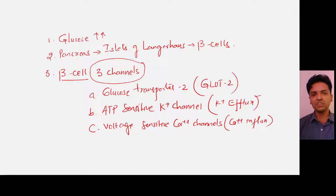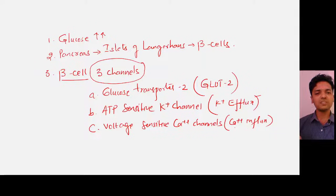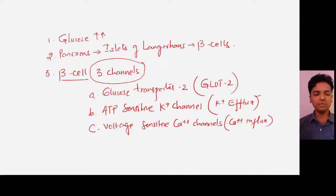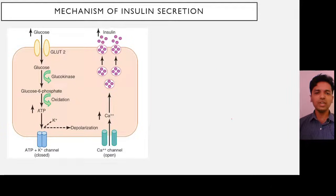To recap: the beta cell has three channels. GLUT2 allows glucose from outside to enter inside. The ATP-sensitive potassium channel causes potassium efflux — potassium inside the cell goes outside. The voltage-sensitive calcium channel causes calcium influx and opens whenever the cell undergoes depolarization. Now let's see the mechanism of insulin secretion.